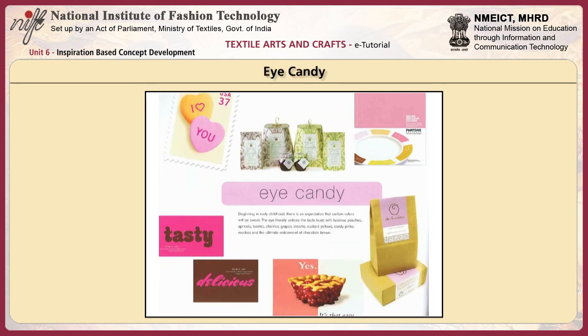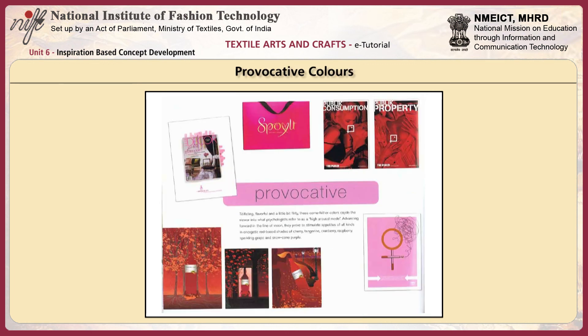Beginning in early childhood, there is an expectation that certain colors will be sweet. The eye literally entices the taste buds with luscious peaches, apricots, berries, cherries, grapes, creams, custard yellows, candy pinks, mochas and the ultimate enticement of chocolate brown. Titillating, flavorful and a little bit flirty, these come-hither colors cajole the viewer into what psychologists refer to as a high arousal mode.